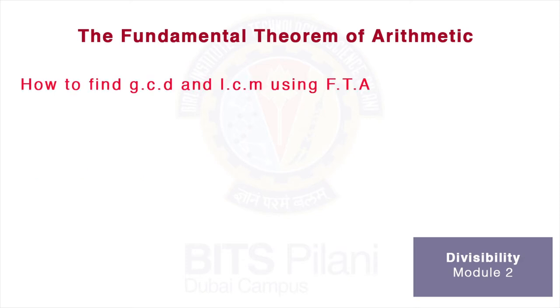How do we use the fundamental theorem of arithmetic to find the GCD and LCM of any given number of integers? Let's take an example. What if we are asked to find the GCD and LCM of 26, 48, and 36?